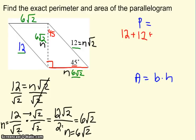So it looks like we have a 12 and a 12 - that's the left and the right diagonal sides - and a 6 root 2 and a 6 root 2.